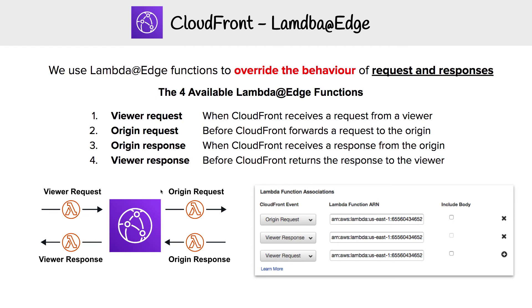That is one method for protecting content, but there are a lot of creative solutions. You could use Lambda@Edge to serve up A/B testing websites — when the viewer request comes in, you have a roll of the die, and it will change what it serves back, so it could be setup A or setup B. That's something we also do on the ExamPro marketing website.